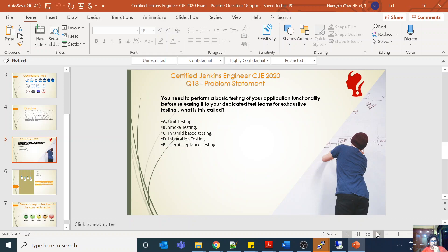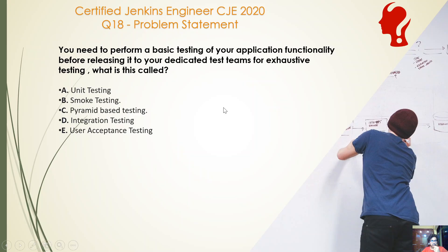Welcome back everyone to question number 18 of the certified Jenkins engineer series. Question 18: you need to perform a basic testing of your application functionality before releasing it to your dedicated test teams for exhaustive testing. What is this kind of testing called? Unit testing, smoke testing, pyramid-based testing, integration testing, or user acceptance test?